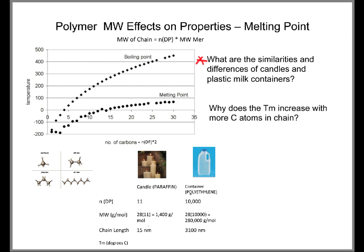The candle is made of paraffin, and the container is made of polyethylene. Notice that their degree of polymerization, and therefore their molecular weight, is different. The candle has a lower molecular weight than that of the polyethylene. What is interesting though, is that these two types of materials have the same mer, which is ethylene.